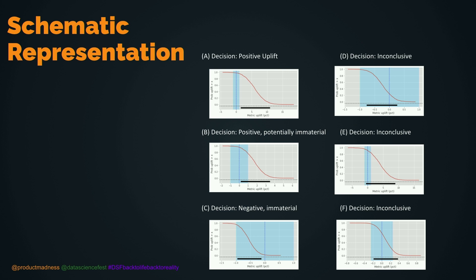In the last three examples — D, E, and F — these are inconclusive results. The HDI crosses zero and is within the ROPE. In this case we would conclude there is no evidence to show that the treatment is better than the control.